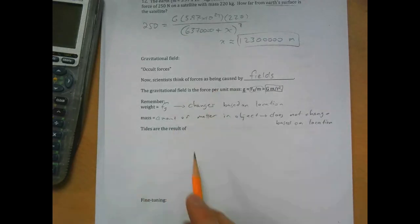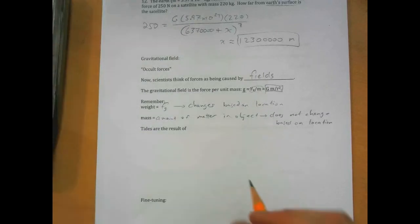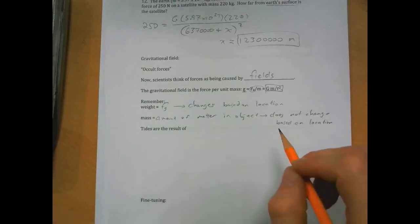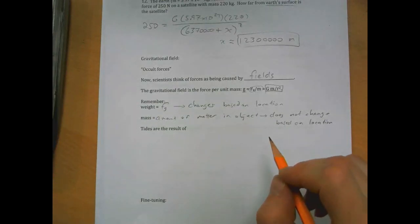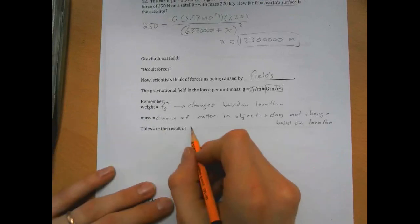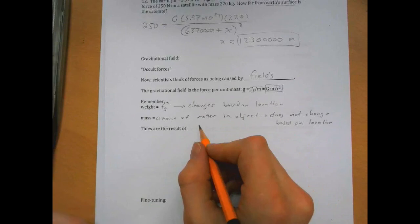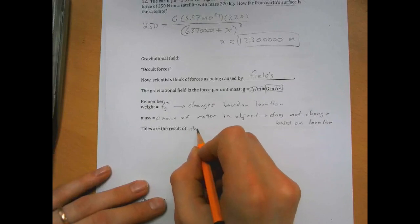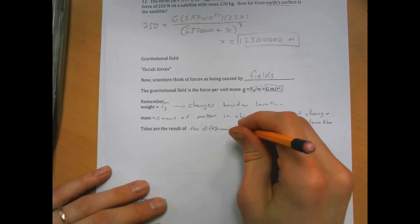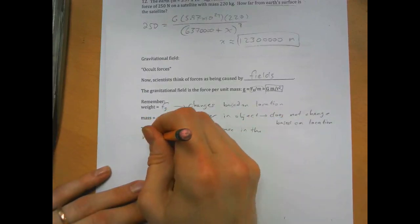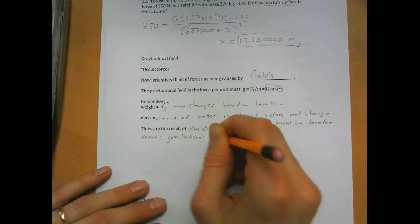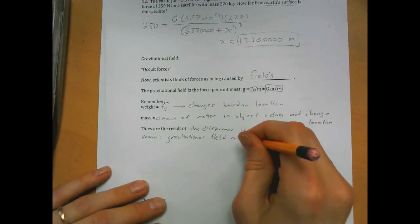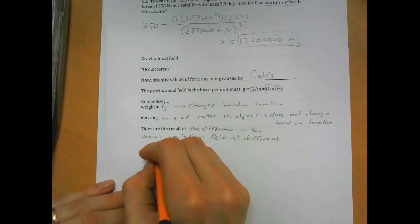Tides are related to the gravitational field. The tides on earth, you know, high tides, low tides. I'm going to explain and draw a diagram explaining why these occur, and you need to know how to explain the tides. So the tides are a result of the gravitational field from the moon, but they're a result of a difference in the gravitational field from the moon at different points. Tides are a result of the difference in the moon's gravitational field measured at different points on earth.